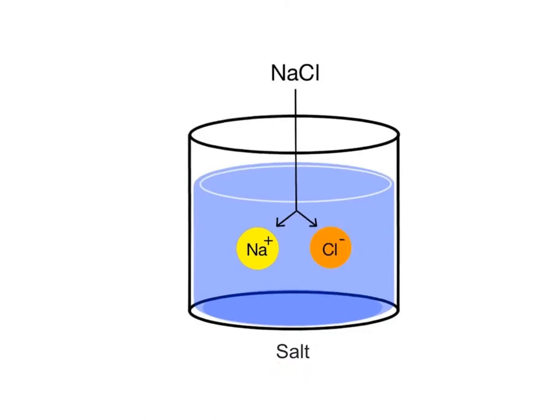A salt is a chemical that dissociates into cations and anions when dissolved in water, with neither of the ions being hydrogen or hydroxide. For example, when the salt sodium chloride dissociates in water, it ionizes into sodium ions and chloride ions.